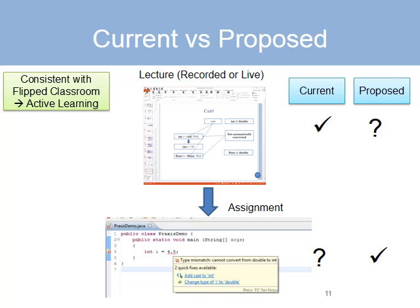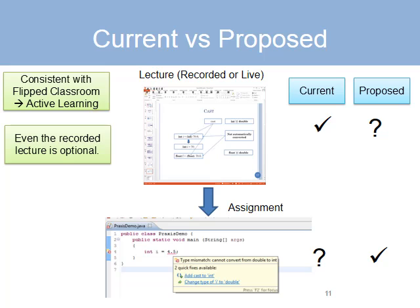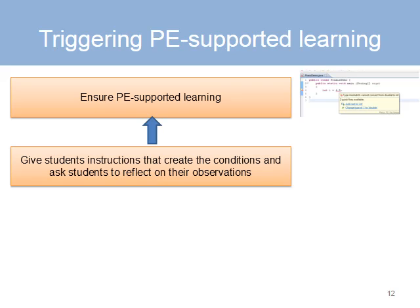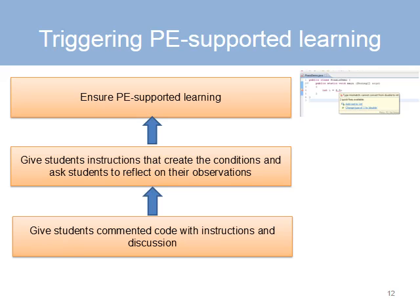This approach is consistent with active learning, because students are using the programming environment to learn, and consistent with flipped classrooms, except that flipped classrooms expect the recorded lecture to be looked at at home. Here, even the recorded lecture is optional. So in the proposed model, we must somehow ensure learning supported by the programming environment. This can be done by giving students instructions that create the conditions that trigger such learning and ask students to reflect on their observations. This in turn can be supported by giving students commented code with instructions and discussion.